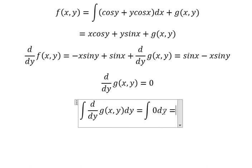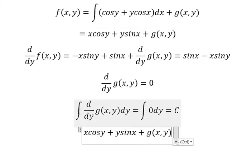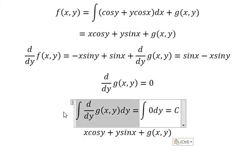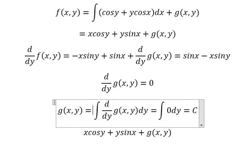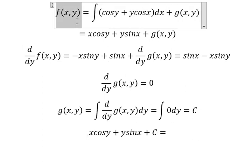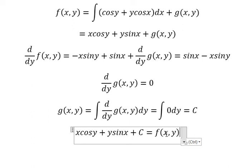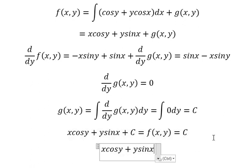Next I will integrate both sides and we have C here. So we go back, the integration of this one we have g(x,y). The general solution is the same, so f(x,y) equals C, and we know that this one equals to f(x,y). So f(x,y) equals C and now we can simplify like this: x cos y plus y sin x equals C.